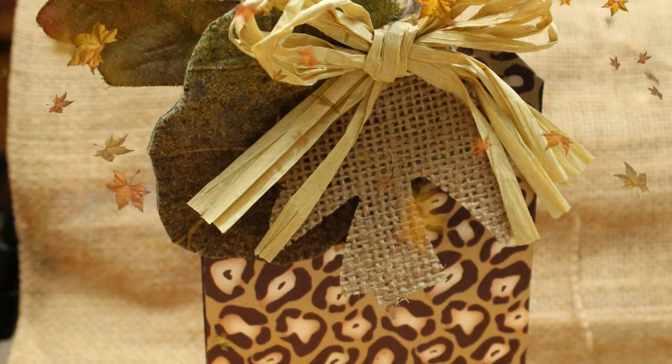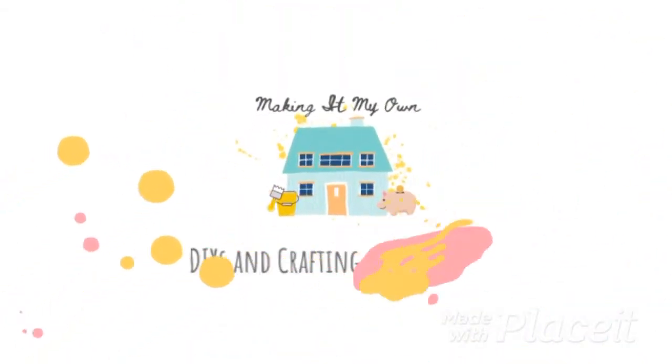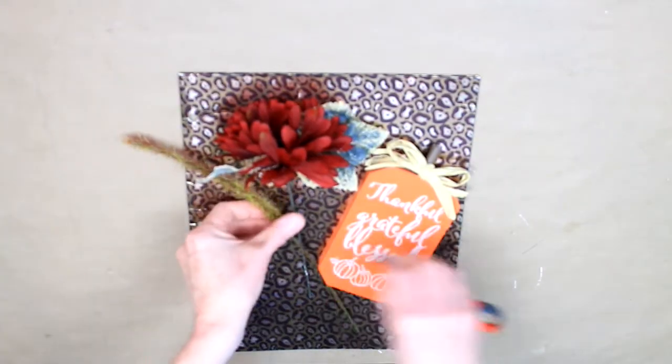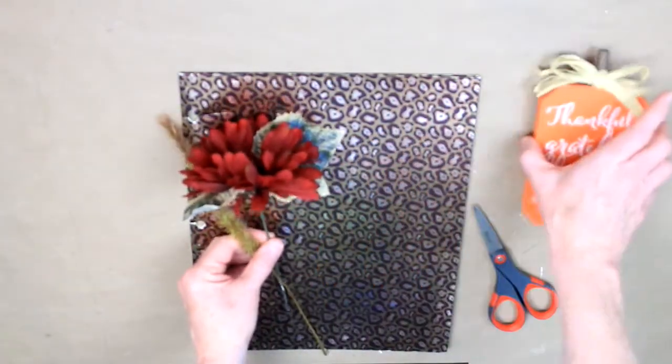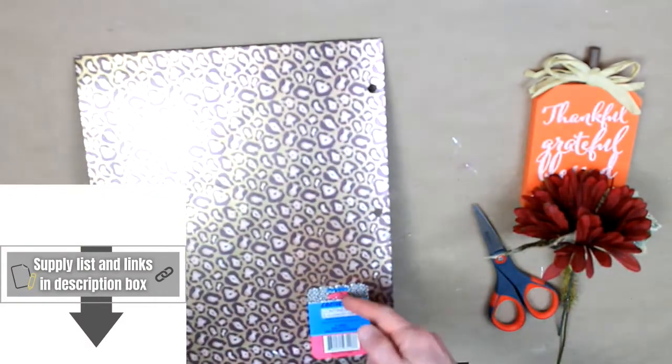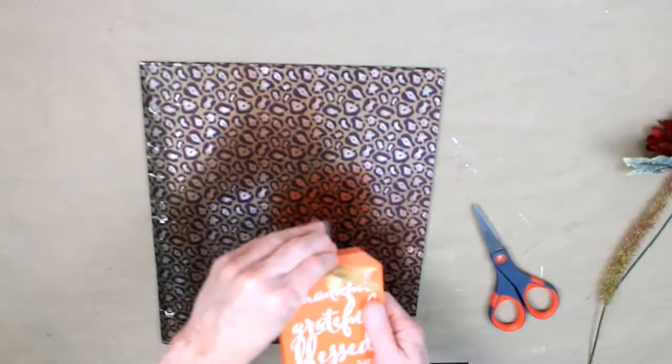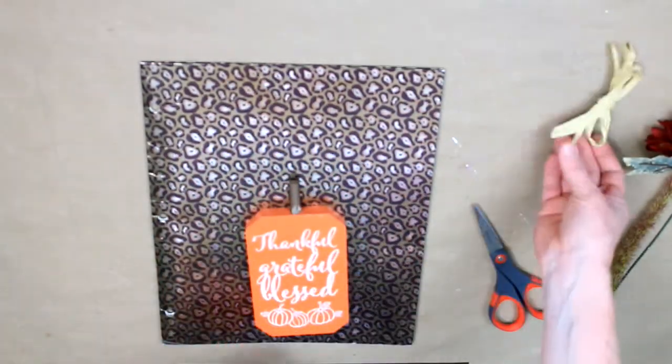Let's make this leopard print pumpkin with Dollar Tree items and scraps. I'm starting off with some florals and things I might want to use, including a metallic big cat print folder—leopard or cheetah—and I'll take this little pumpkin from Dollar Tree.